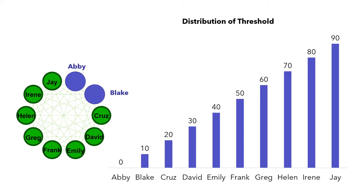Next, let's look at Blake. Blake has a threshold of 10%, meaning for Blake to adopt the idea, he needs at least 10% of the people in his social network to adopt the idea before he does.